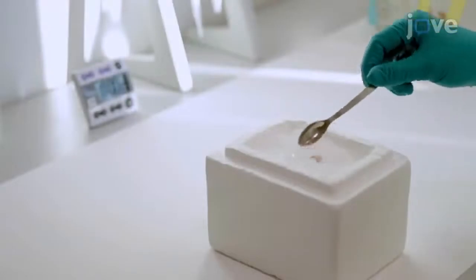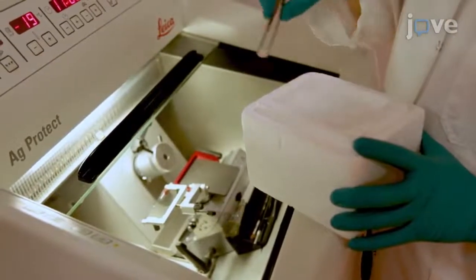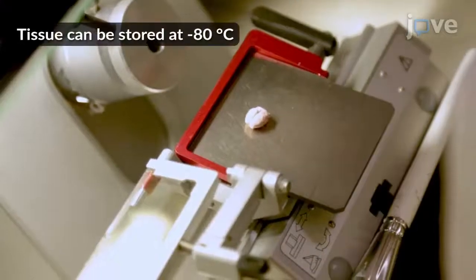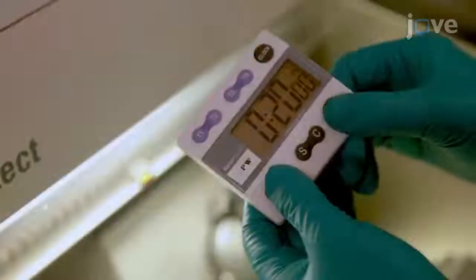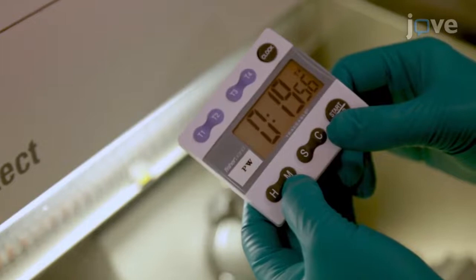To begin, submerge the tissue in powdered dry ice to snap-freeze it. Transfer the frozen tissue directly to a cryostat that is set to minus 20 degrees Celsius. Let the tissue acclimate to minus 20 degrees Celsius in the cryostat for 20 minutes.